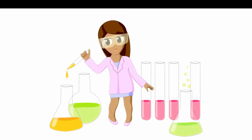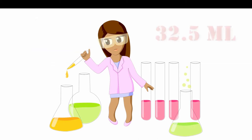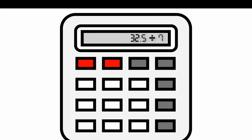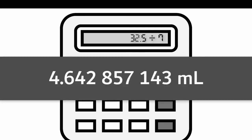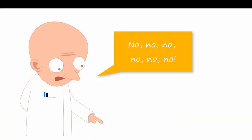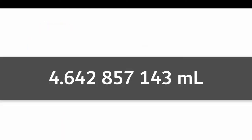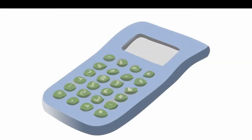Let's pretend you're hired as a chemical technologist for a company that produces pharmaceuticals. For one project, you have to pour 32.5 milliliters from a collection vessel and separate the liquid samples into seven equal parts in seven test vials. Using a calculator, you calculate the size of each sample by dividing 32.5 milliliters by seven. When you record in your logs that each sample is 4.642 milliliters, you find yourself in trouble with the lab shift supervisor for recording an inaccurate measurement.